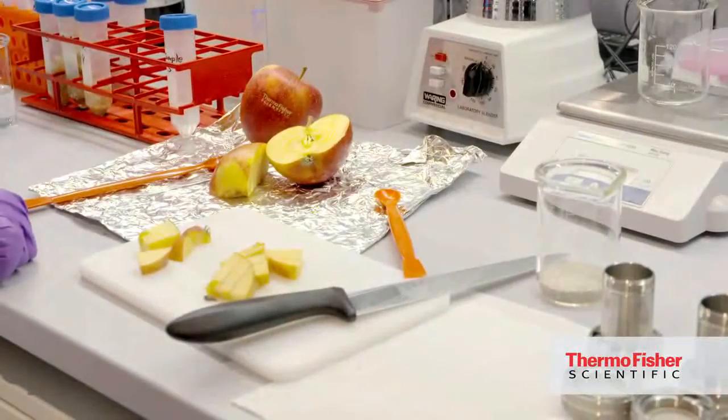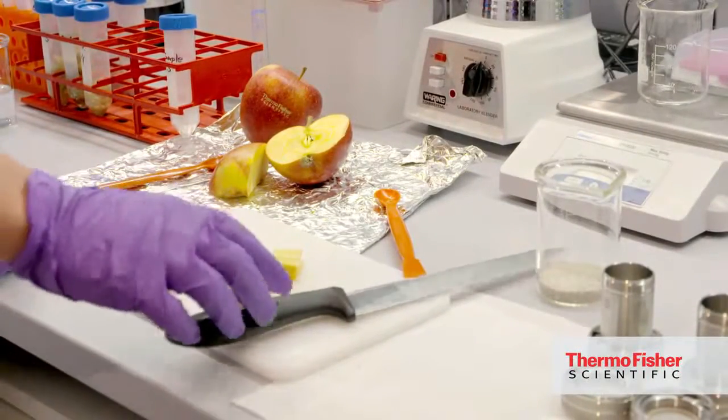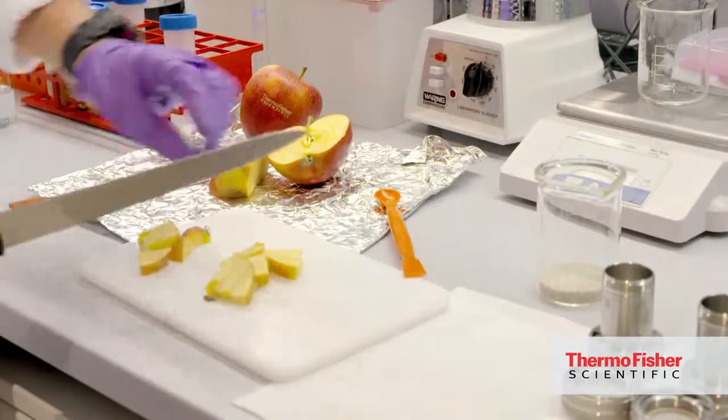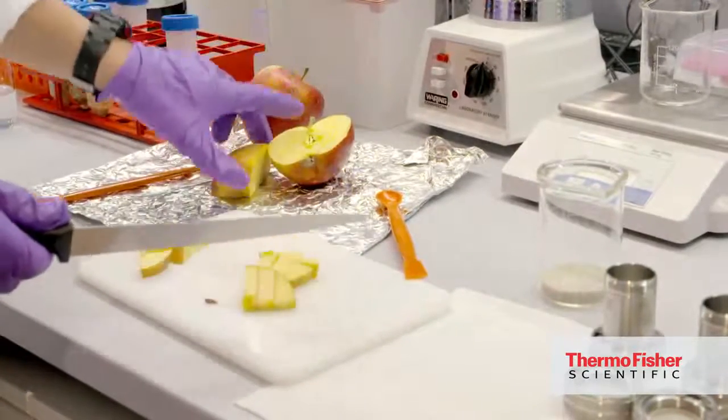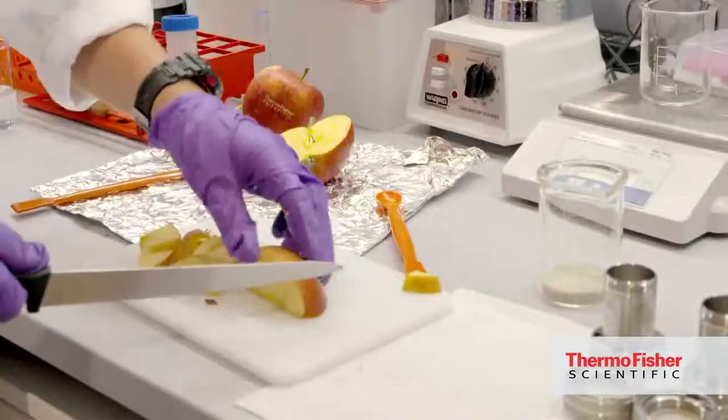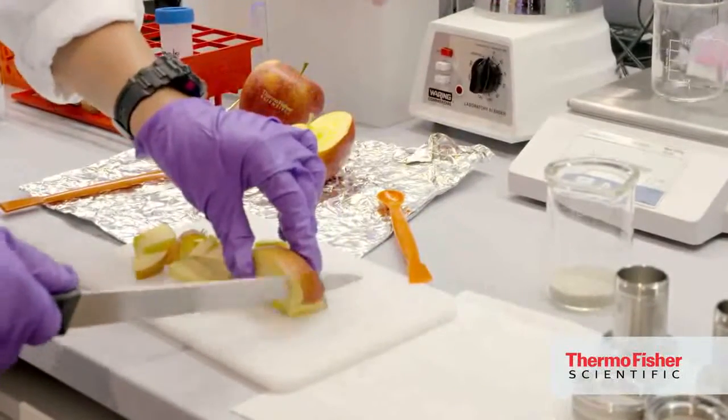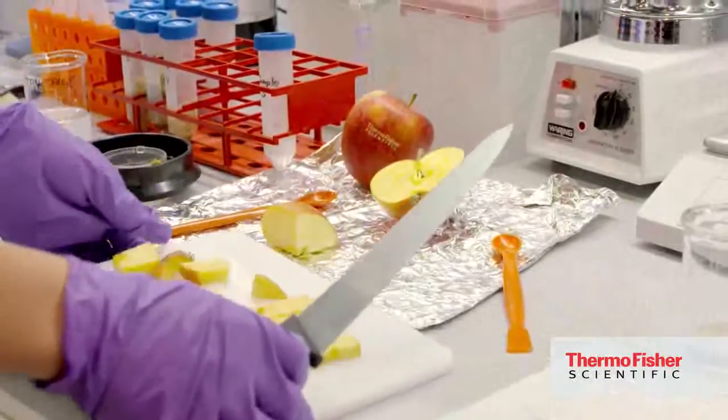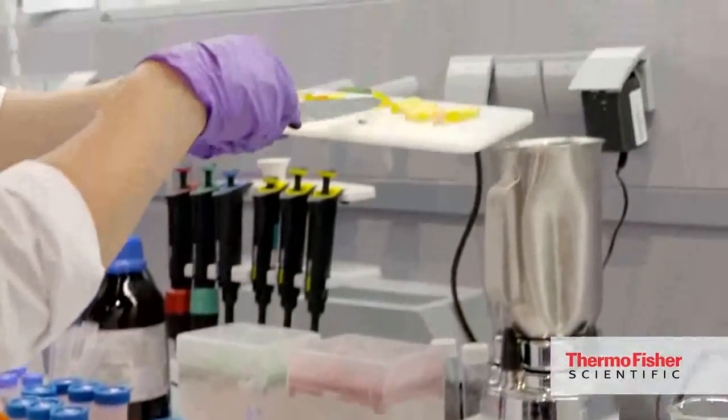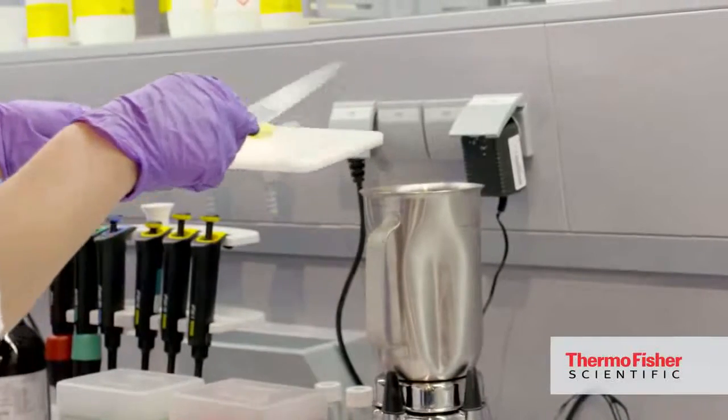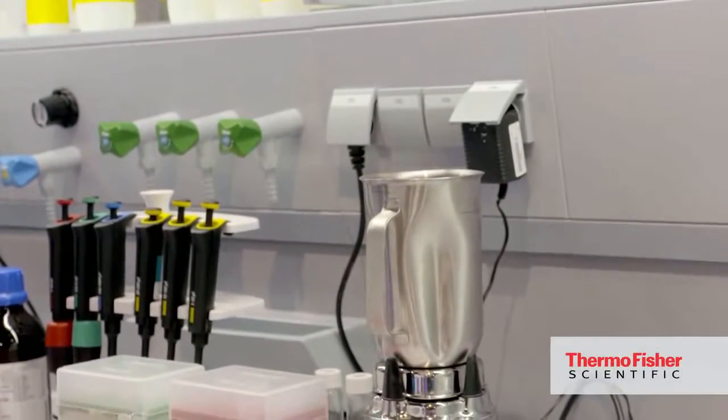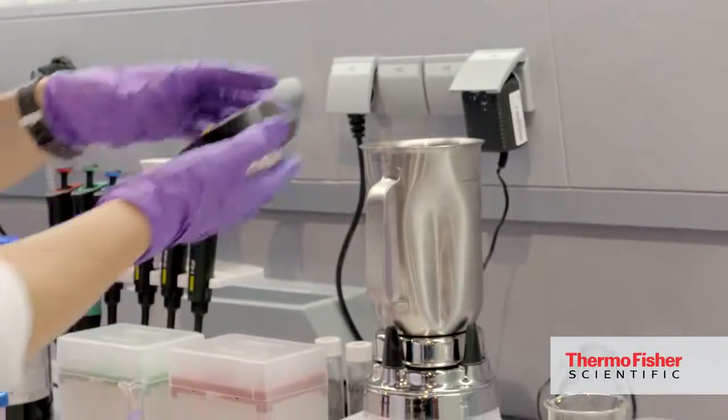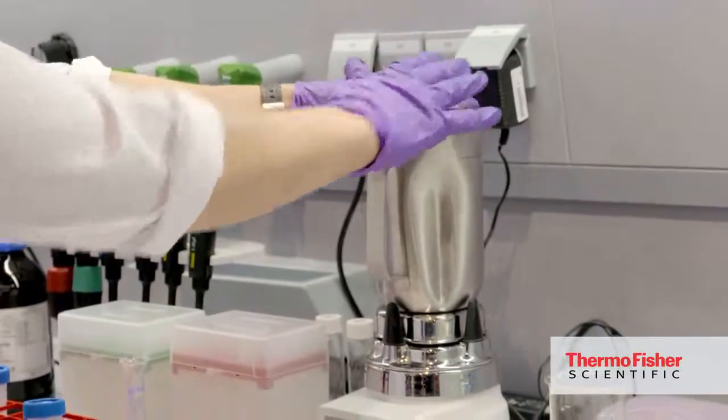So we are doing pesticide analysis and for that first of all we take an apple, the sample, and we chop it making it ready for the homogenization. So the chopped sample will be put into the blender. This is like a normal kitchen blender, and like at home we just put it on.